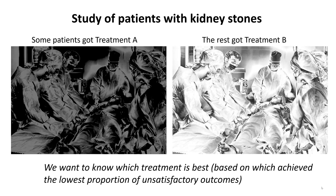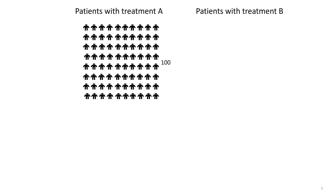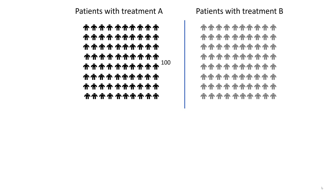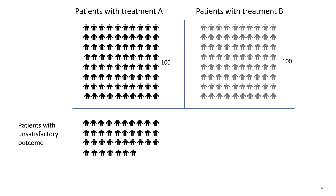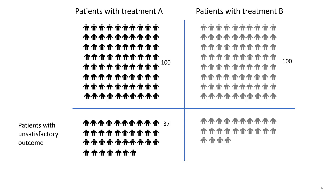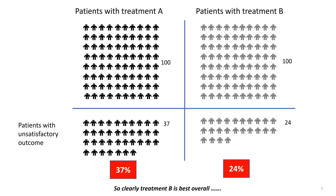We want to know which treatment is best based on which achieved the lowest proportion of unsatisfactory outcomes. There were 100 patients who got treatment A, and similarly, 100 patients who got treatment B. Of the 100 patients who got treatment A, 37 had an unsatisfactory outcome. And of the 100 patients who got treatment B, just 24 had an unsatisfactory outcome. So the failure rate for treatment A is 37%, and 24% for treatment B. So clearly, treatment B is best overall.